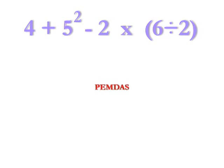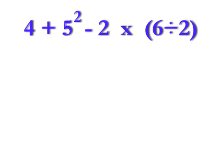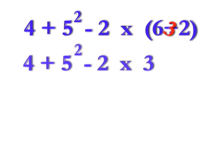Well, think of your PEMDAS. PEMDAS starts with a P, and P is for parentheses, so take care of what's in the parentheses first. In this case, it's 6 divided by 2, which is 3. Now, rewrite the sentence as 4 plus 5 squared minus 2 times 3.